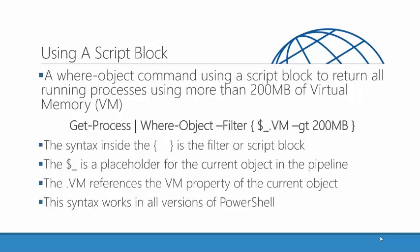Inside of those curly brackets, you have the dollar sign underscore — that's just a variable representation of our object. We have the dot VM, which is referencing the VM property, and then we have our comparison operator, greater than 200 megabytes. Each process is retrieved by Get-Process, placed in the pipeline, and Where-Object examines each one. If the virtual memory property is greater than 200 megabytes, we see it in our output. If not, Where-Object drops it. This traditional syntax works in every version of PowerShell, all the way back to version 1.0.